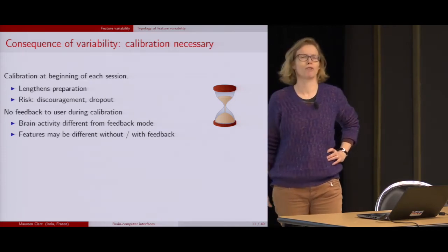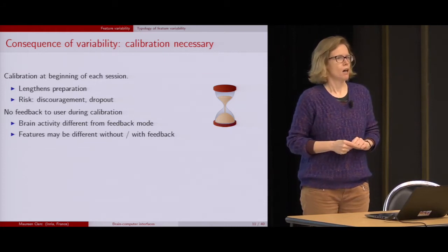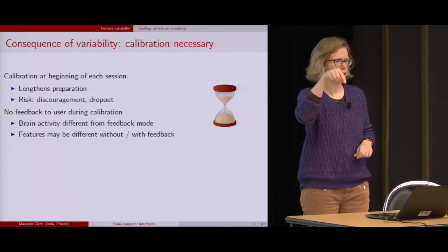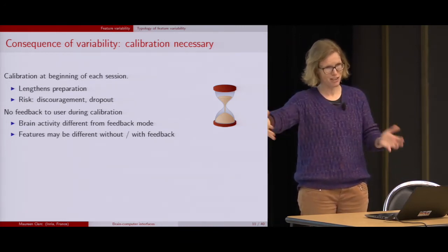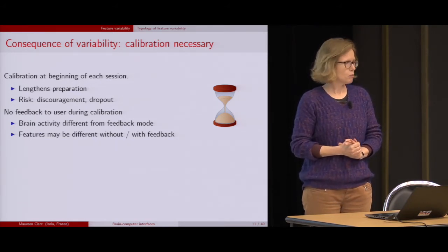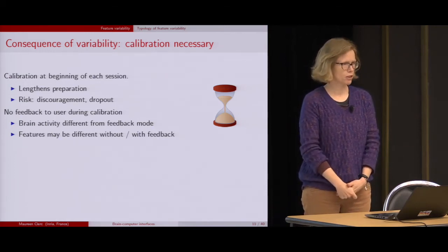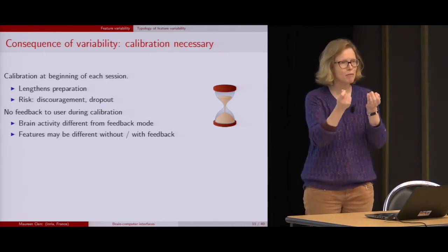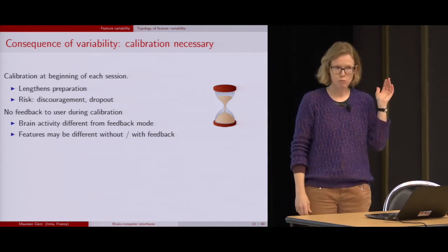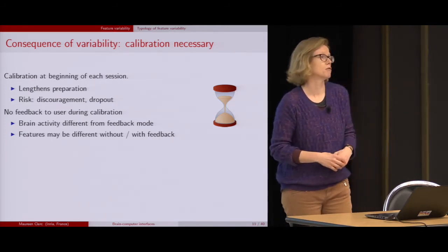One way to overcome these problems is to calibrate at the start of a session: tell the person what to do at certain times, and like that we get labels for this particular person at this particular time — a little dataset with labels from which we can learn a new classifier. But this lengthens the process. People get discouraged spending maybe 10 or 15 minutes doing something useless to them. Moreover, they don't get feedback because the system isn't trained yet, so they might be mind-wandering, and their brain activity might be totally different from what it would be during the real BCI.